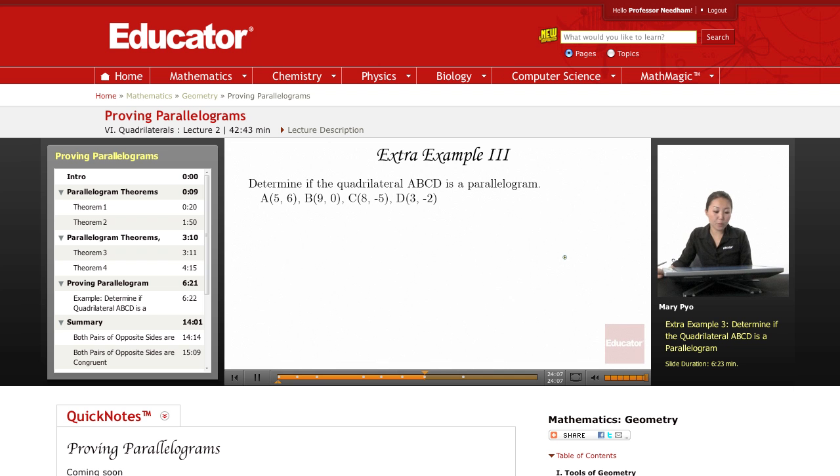The next example: determine if the quadrilateral ABCD is a parallelogram. We're given the coordinates of each of the vertices of the quadrilateral, and then we have to determine if it's a parallelogram.